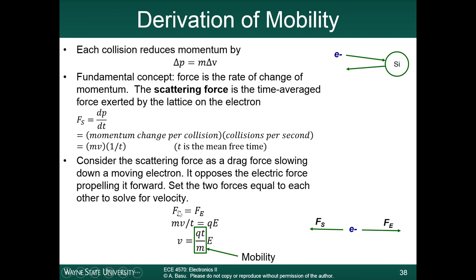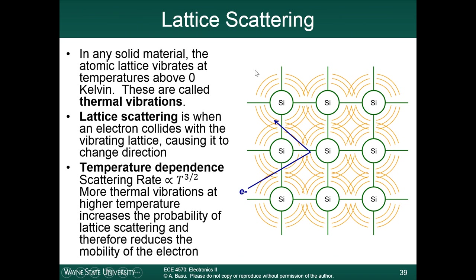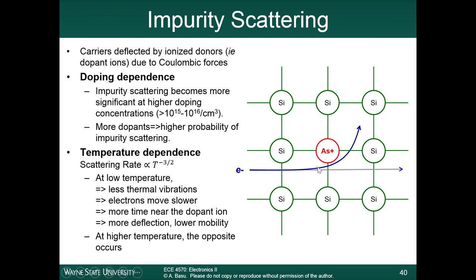We derived a relationship for the mobility, then we talked about the two different mechanisms. Lattice scattering is due to collisions between the electron and the thermal vibrations within the lattice. This has the temperature T to the power of three halves, because more thermal vibrations at higher temperature will increase the probability that the electron will collide with it. The second mechanism was impurity scattering — the deflection of electrons due to Coulombic interactions with impurity ions. In an n-type semiconductor, arsenic atoms within the silicon lattice acquire a positively charged nucleus when the extra electron leaves. As an electron moves through the lattice, this negatively charged electron gets attracted to the positively charged arsenic ion and becomes deflected. So this is another form of scattering.